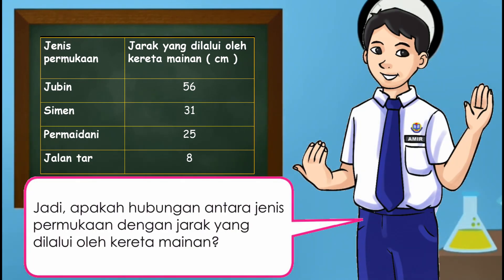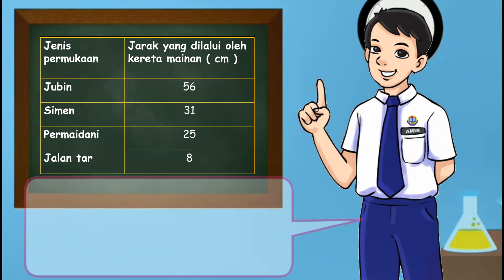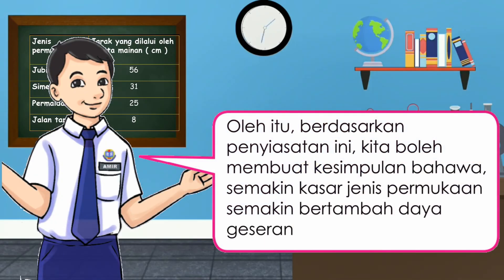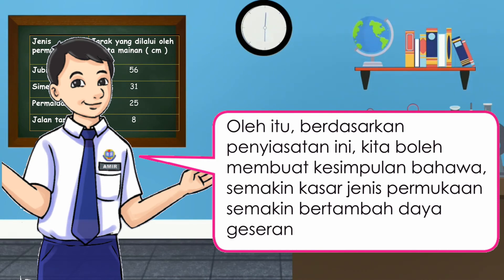Jadi, apakah hubungan antara jenis permukaan dengan jarak yang dilalui oleh kereta mainan? Semakin kasar jenis permukaan, semakin berkurang jarak yang dilalui oleh kereta mainan. Oleh itu, berdasarkan penyiasatan ini, kita boleh membuat kesimpulan bahawa semakin kasar jenis permukaan, semakin bertambah daya geseran.